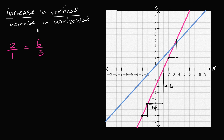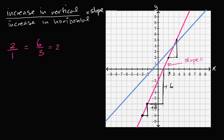This notion of increase in vertical divided by increase in horizontal is what mathematicians use to describe the steepness of lines, and it's called the slope. You're probably familiar with the word slope from ski slopes — a ski slope has a certain inclination, steep or shallow. Slope is a measure of how steep something is, and by convention we measure the increase in vertical for a given increase in horizontal. So the slope of this magenta line is equal to two.